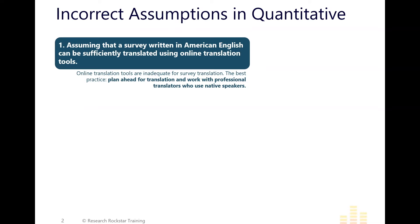A common example: in the US we often use an importance scale — 'not at all important' to 'extremely important' on a five-point scale. In some countries there can be a literal translation, but it loses the meaning and intent. In some languages it's more accurate to ask about 'value to me' rather than 'importance.' If you work with professional translators, they can guide you on all of those things and advise you on how to translate in a way that will be meaningful and not just literal.